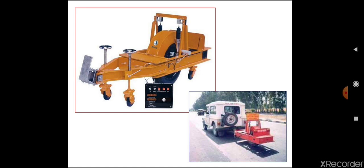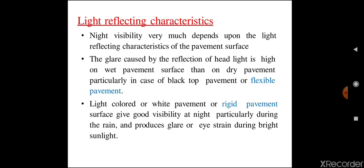This equipment is used to measure unevenness of a pavement. This instrument is called a bump integrator. The bump integrator is fixed to a vehicle, and then the vehicle is moved at a constant speed on the pavement where unevenness has to be measured. Using this bump integrator, we can measure the unevenness of the pavement.